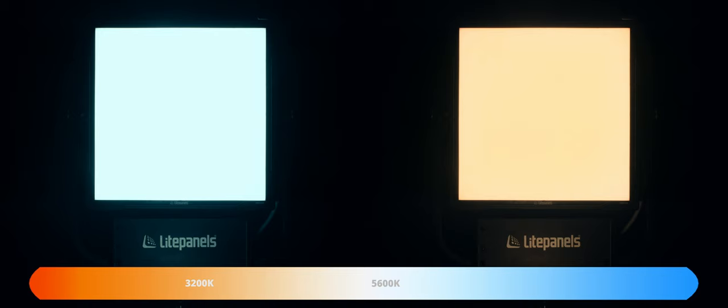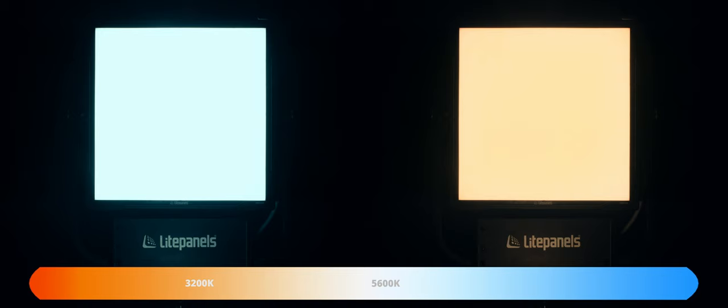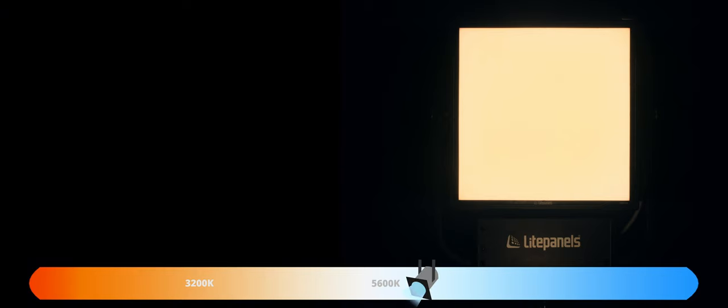Daylight lighting sits around the same temperature as midday sun, around 5600 Kelvin, whereas tungsten lighting sits closer to an incandescent or halogen household bulb, around 3200 Kelvin.